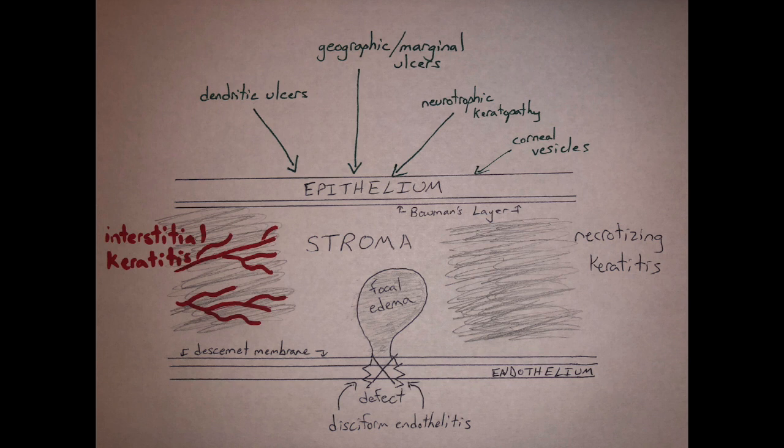Let's talk about the stroma — there are two possibilities. One is interstitial keratitis, which is when you have edema plus neovascularization without involvement from either the epithelium or the endothelium. Number two, we can have necrotizing keratitis, which is simply edema without neovascularization. Both can cause thinning and potential perforation, so we want to watch out for that.